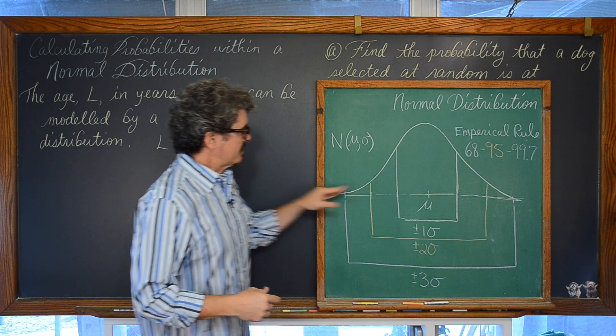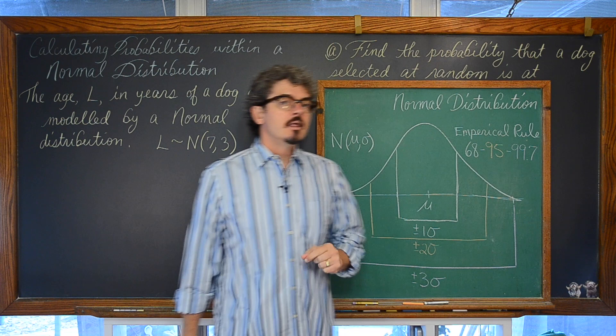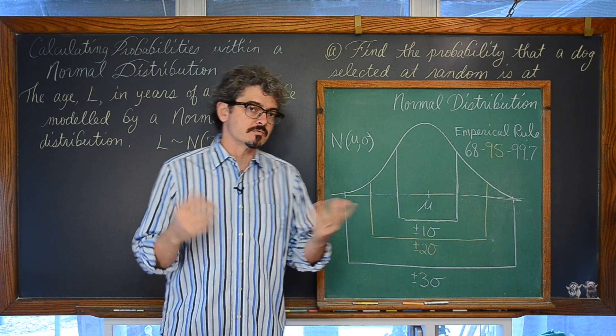Now, a normal distribution — you may recognize that as this sort of bell curve shape. Well, be careful. Not every bell curve is a normal distribution. There are other bell curves that have more area in the tails than a normal distribution, and those are going to be called t-distributions or t-curves.